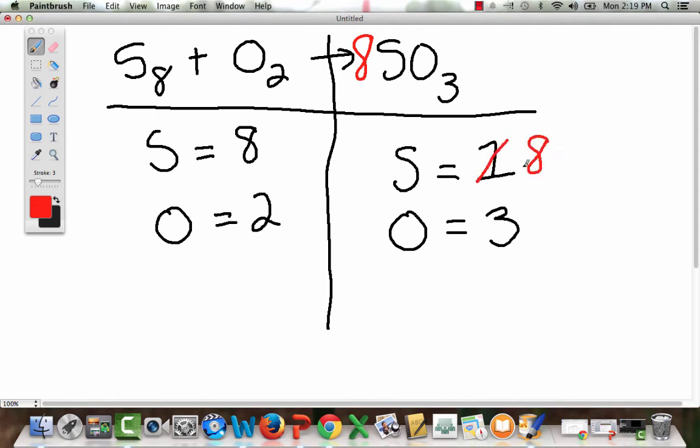And, but look, 8 also is going to affect our oxygen because these guys are married, right? There's no plus sign between them. So, 8 times 3 is going to be 24. And that's okay. So, I've got 8 and 8. And now, I have 2 and 24.